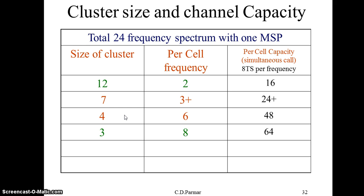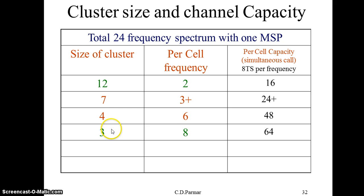If we try the example of four cells in a cluster, each cell may have six frequencies — 24 divided by 4 — and each frequency has eight time slots, so 6 multiplied by 8 gives 48 users in a cell at a time. For three cells in a cluster, 24 frequencies divided by three gives 8 frequencies per cell, yielding 64 users who can communicate in a cell.